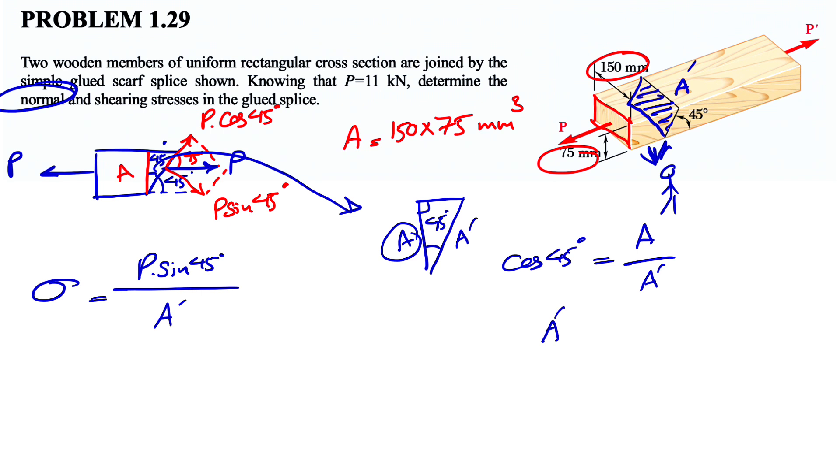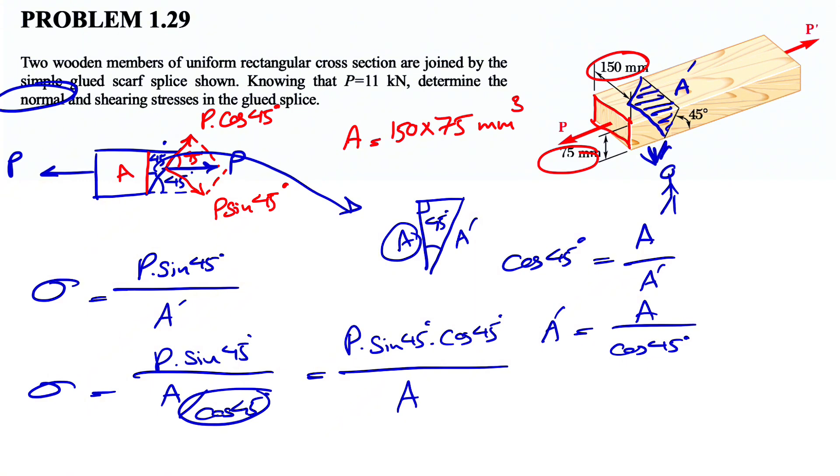That means our A prime in here would be A divided by cosine of 45 degrees. So now that we have that, basically our normal stress would be P sine of 45 degrees divided by A divided by cosine of 45 degrees. This one can go to our numerator. So what we're going to get is basically P sine of 45 degrees times cosine of 45 degrees divided by A.